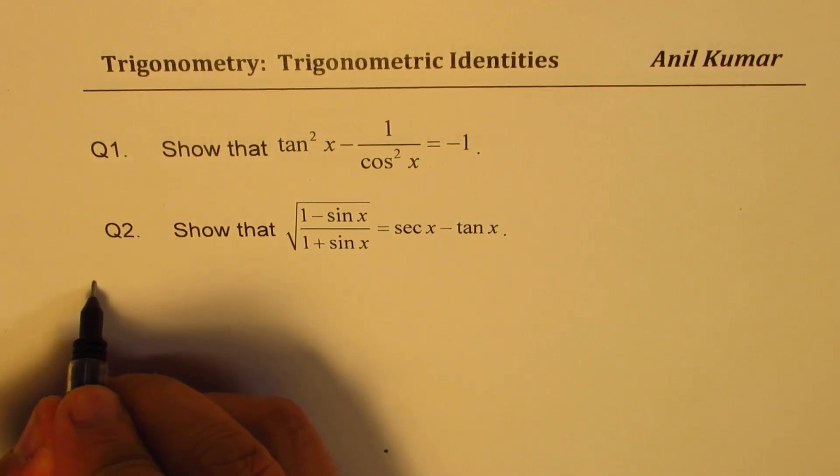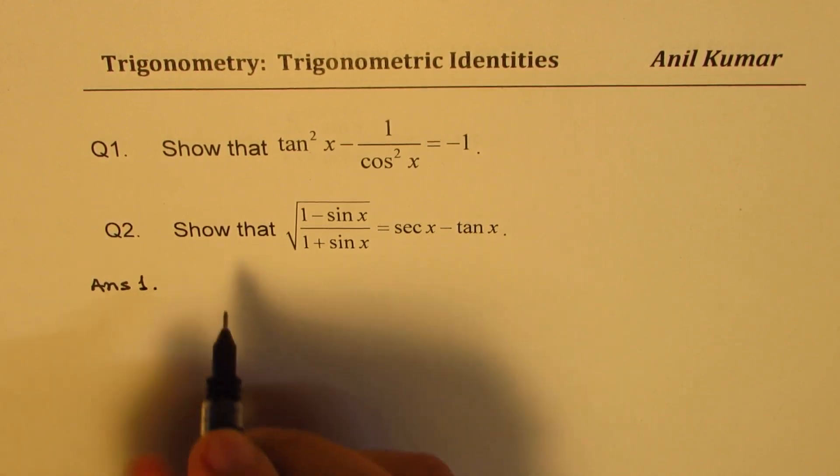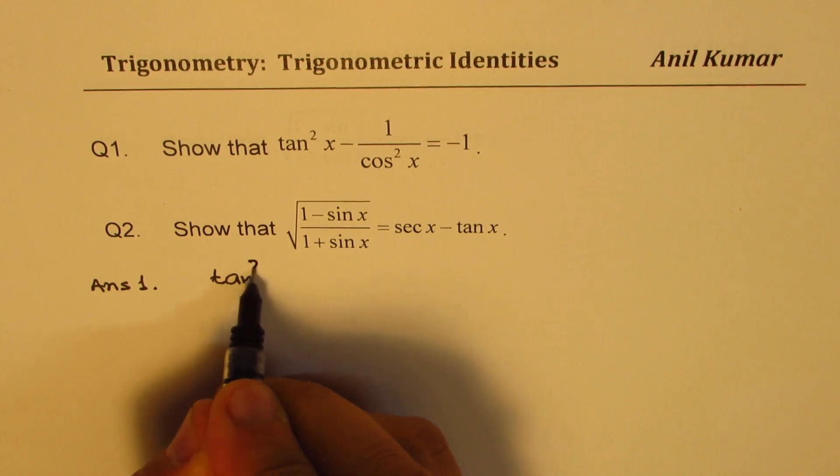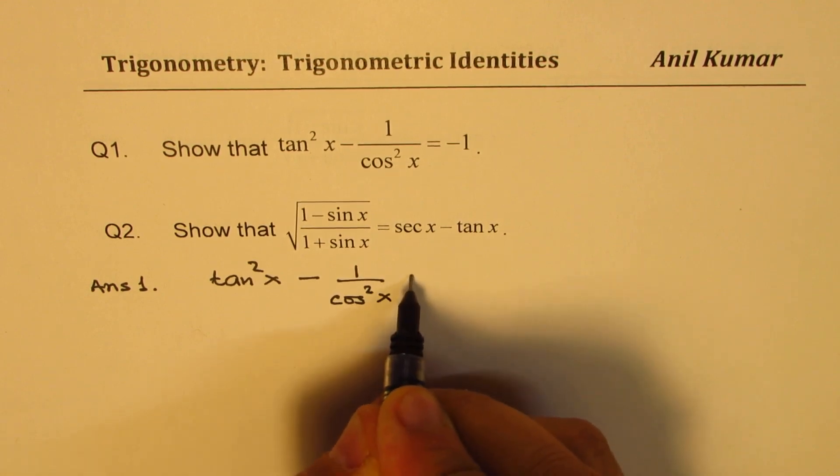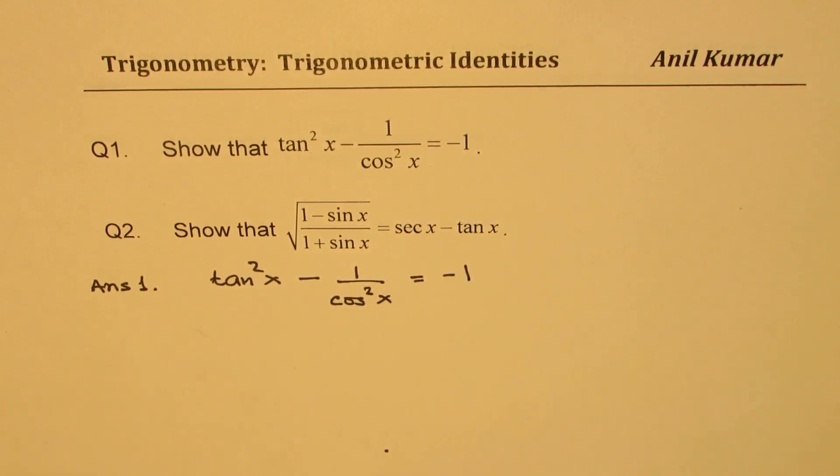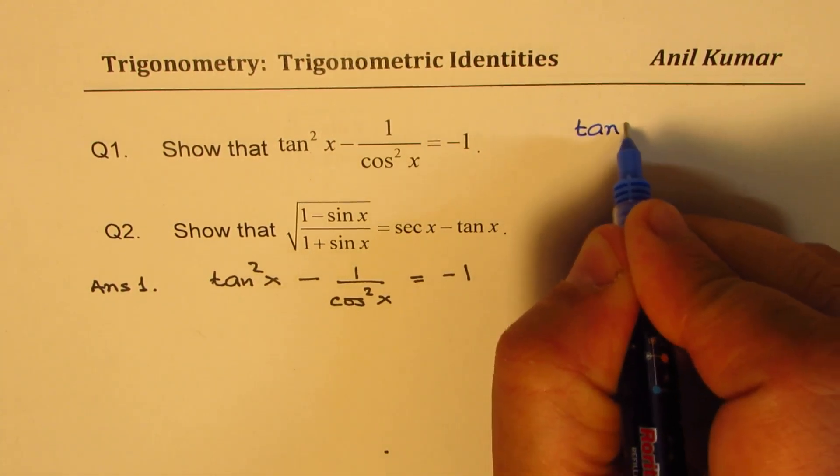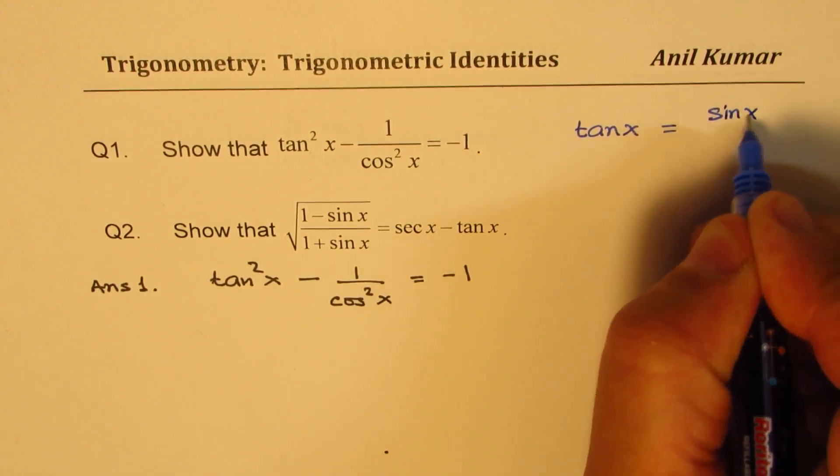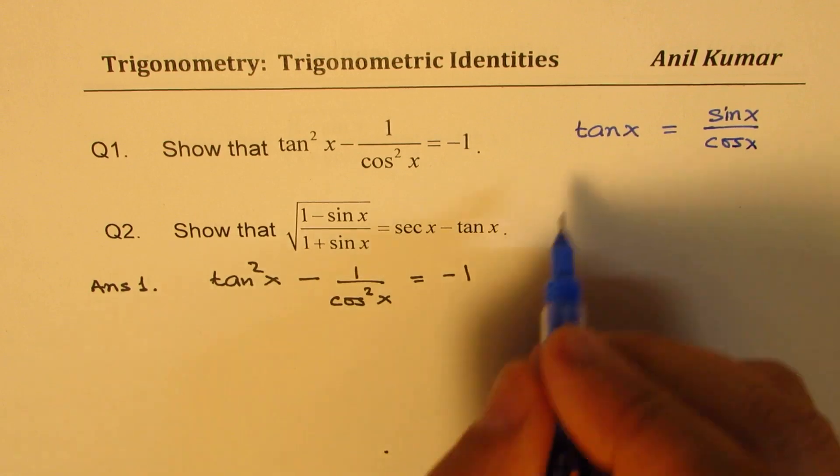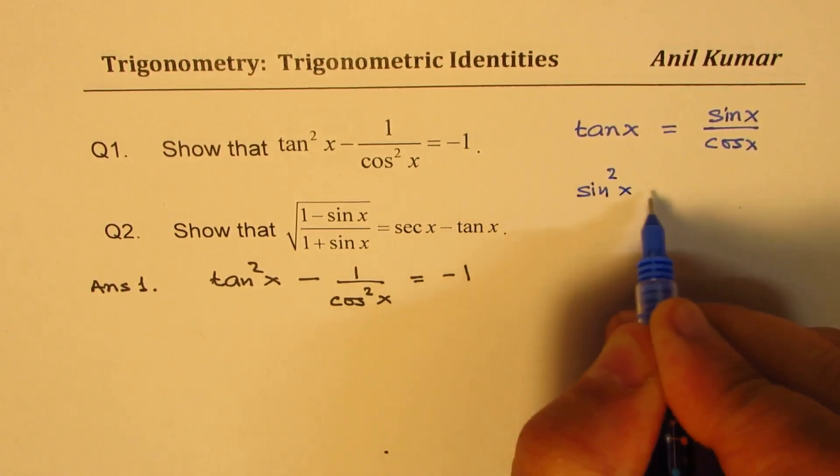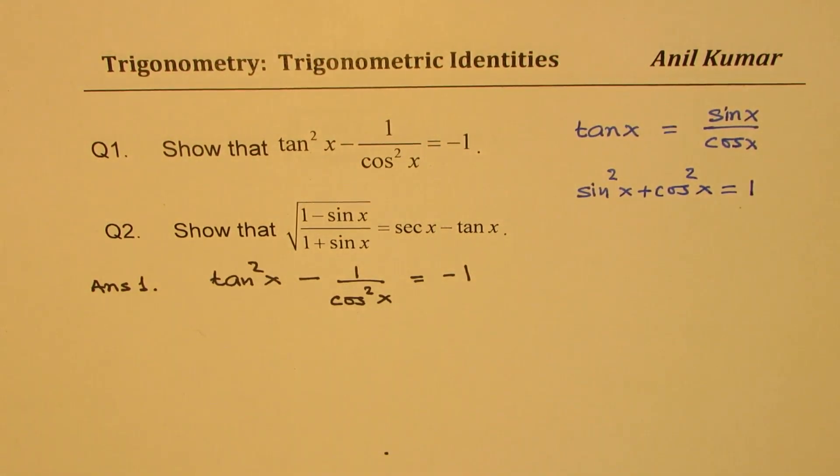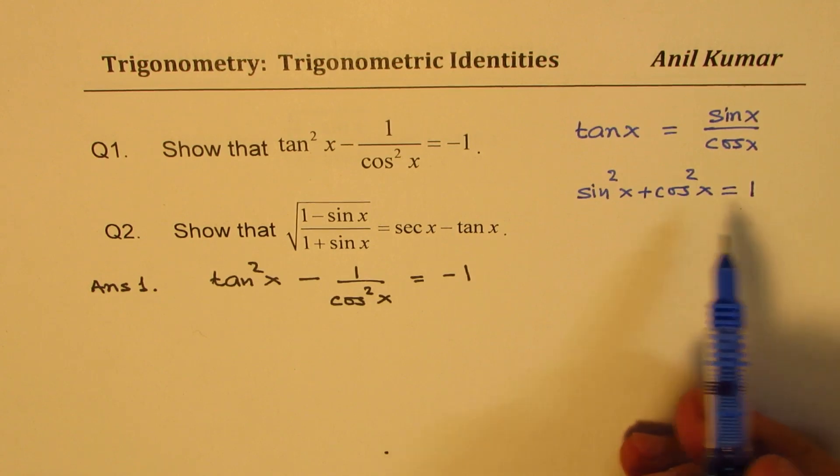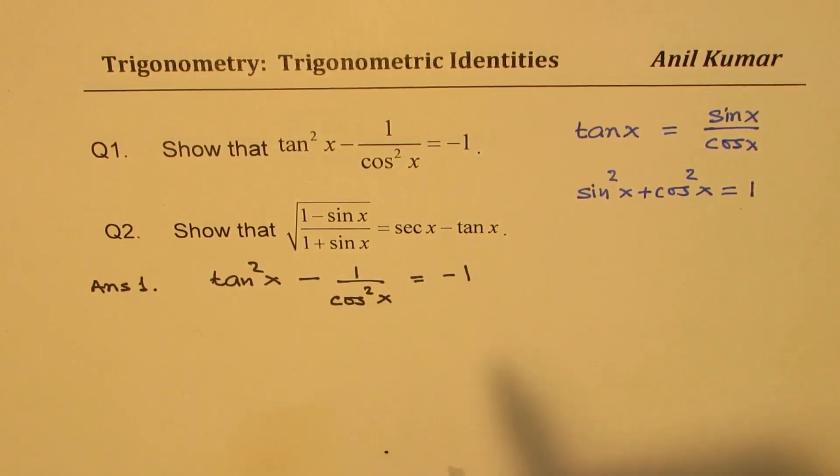Now let's answer question number 1. We need to show that tan²x - 1/cos²x is equal to -1. Now a couple of things we should remember to solve this. One is, what is tanx equal to? Tanx equals sinx/cosx. Second thing, we also know that sin²x + cos²x is equal to 1. So we could use this identity to prove what we need to prove.